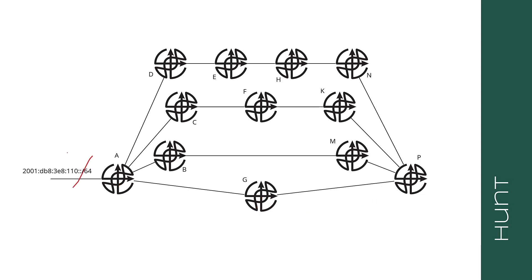Now let's say this link fails — A's connection to 110::/64. When this fails, A at T1 sends a withdrawal to G, to B, to C, and D. Now B, C, D, and G are going to wait the min route advertisement interval and then send a withdrawal. So at T2, after the MRAI, G sends a withdrawal to P, B sends a withdrawal to M, C sends a withdrawal to F, and D sends a withdrawal to E.